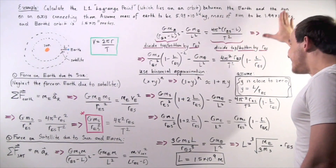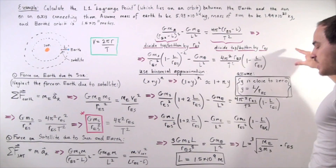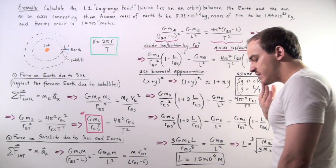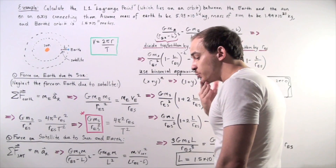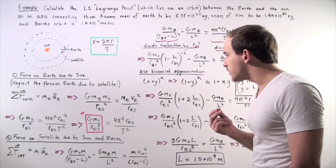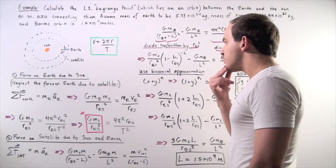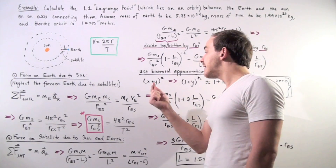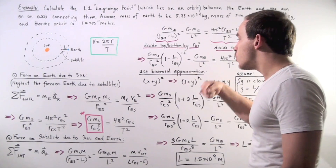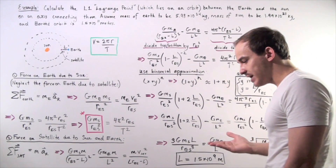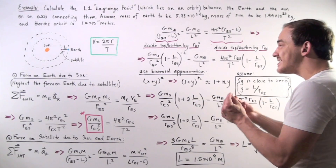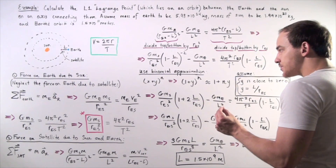Now we have to utilize the binomial expansion theorem. The binomial expansion theorem states: if we have two numbers x and y raised to a power n — a real number — we can express them as a sum of different terms.